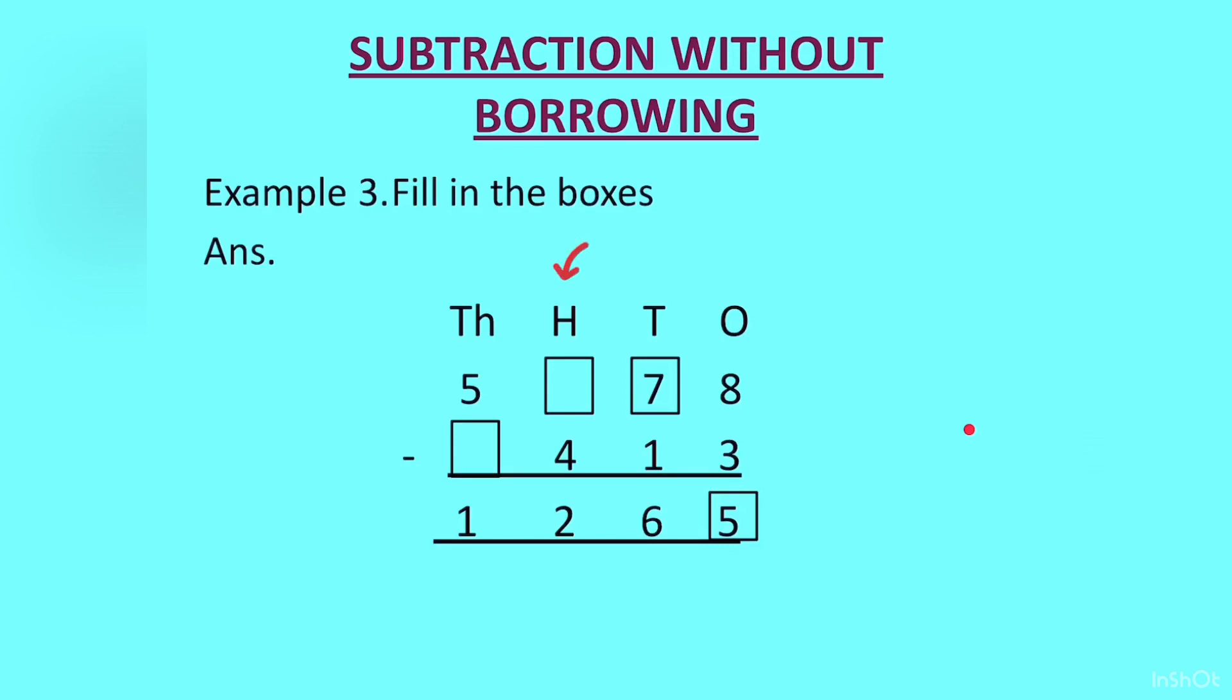Now coming to the hundreds column - dash minus 4 should give us 2. For this we will add 4 and 2. 4 plus 2 is 6 and we write 6 here. You can also cross check: 6 minus 4 is 2. Now 5 minus dash is 1. From 5 what should you minus that you get the answer as 1? For this we will subtract 1 from 5. 5 minus 1 is 4. So we will write 4 here. Here again you can cross check students, 5 minus 4 is 1.